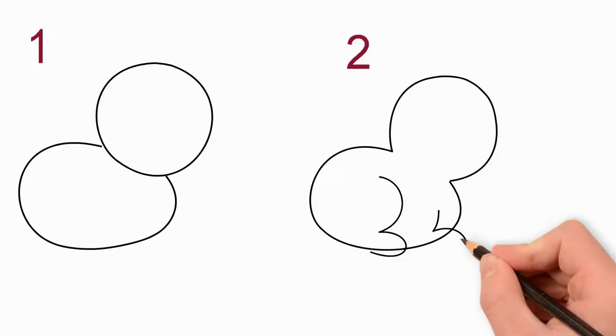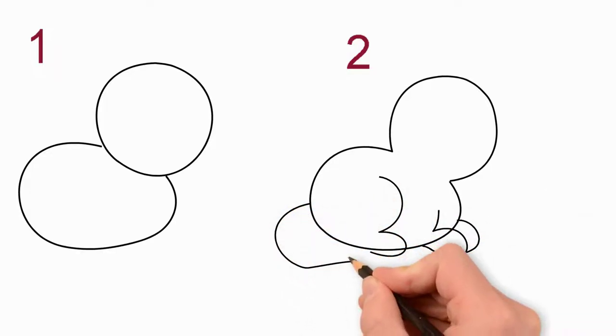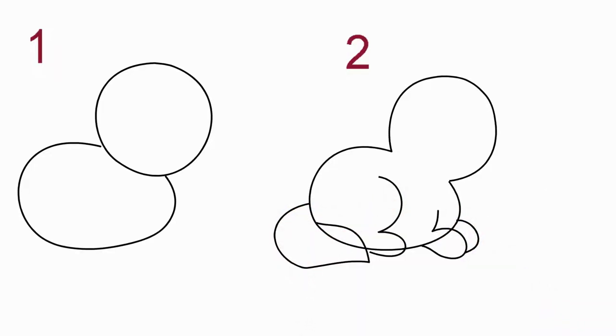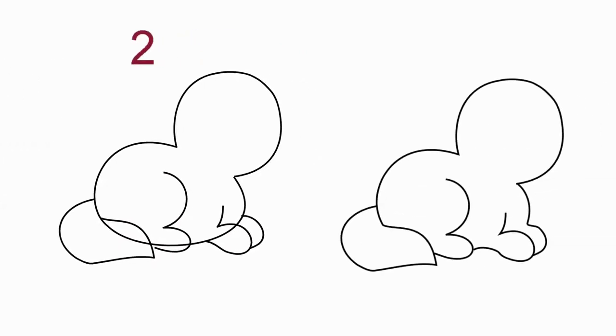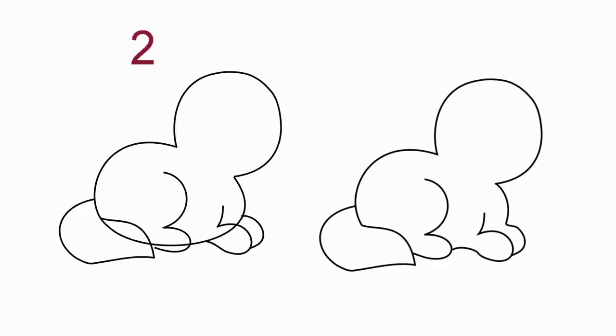Next, draw the contour of the hind legs of the cat. They are bent. Draw the front paws of a cat. They are hidden and only partially visible. Draw a cat's tail. He is big and fluffy.